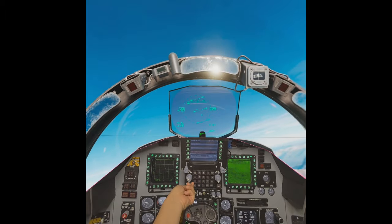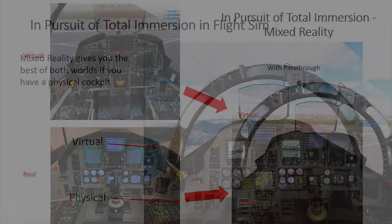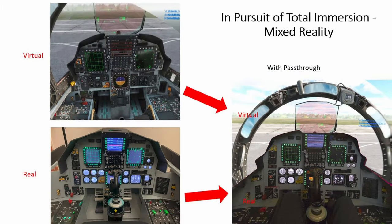In conclusion, if you have a physical cockpit that matches the aircraft you love to fly, you can operate all the switches with ease and not fumble around in VR. With pass-through, you can feel, touch, and see everything, and yet enjoy the virtual world around you for total immersion. This is the holy grail of flight sim.